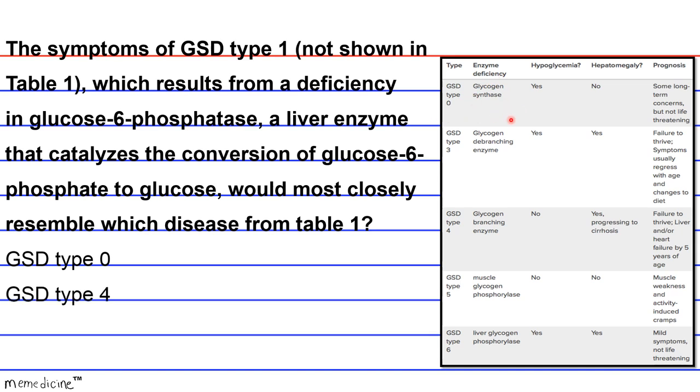Would it be GSD type 0, GSD type 4, GSD type 5 with a deficiency in muscle glycogen phosphorylase, or GSD type 6 with a deficiency in liver glycogen phosphorylase?